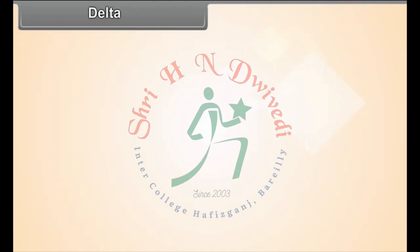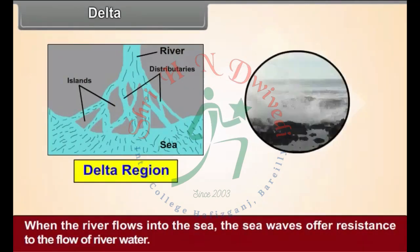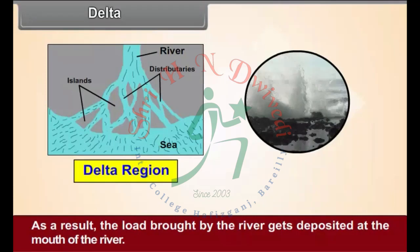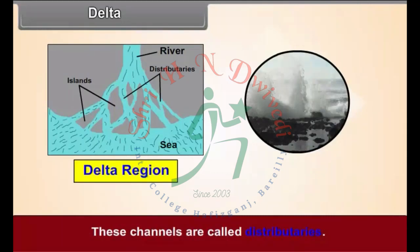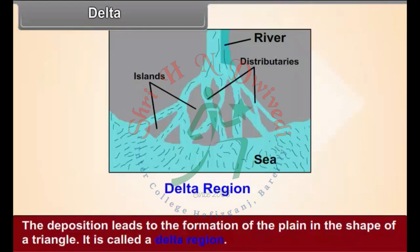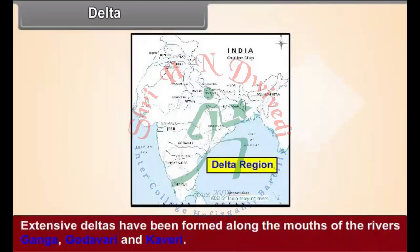Delta: When the river flows into the sea, the sea waves offer resistance to the flow of river water. As a result, the load brought by the river gets deposited at the mouth of the river. This leads to the formation of obstacles in the flow and, as a result, the water gets bifurcated into a number of channels called distributaries. The deposition leads to the formation of a triangular plain called a delta region. Extensive deltas have been formed along the mouths of the rivers Ganga, Godavari and Kaveri.